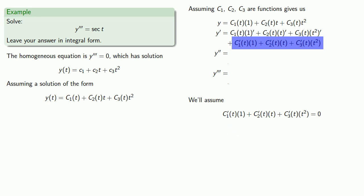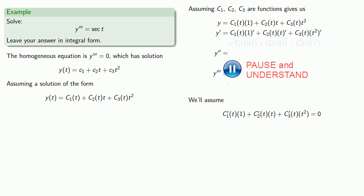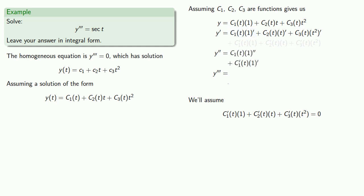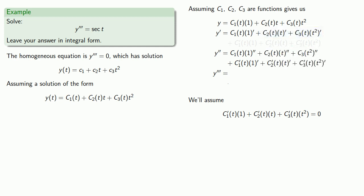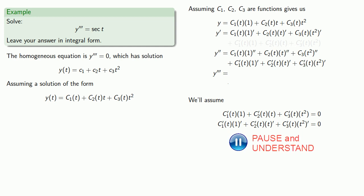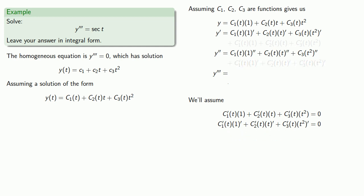And since it's equal to zero, we can ignore it in the higher order derivatives. We'll find that second derivative — that'll be the derivative of the first derivative. We're going to differentiate the first term, which again is a product. So that's going to be c1(t) times the second derivative of 1, plus the derivative of c1 times the derivative of 1. Similarly for the other two terms in our sum, which gives us our second derivative. And again, we'll assume that these terms involving the first derivative of c1, c2, and c3 are going to be equal to zero.